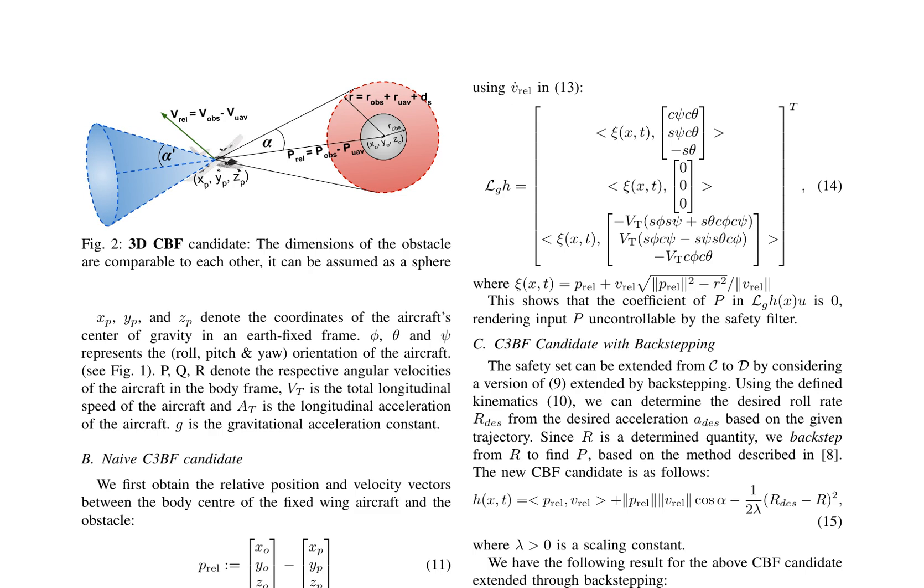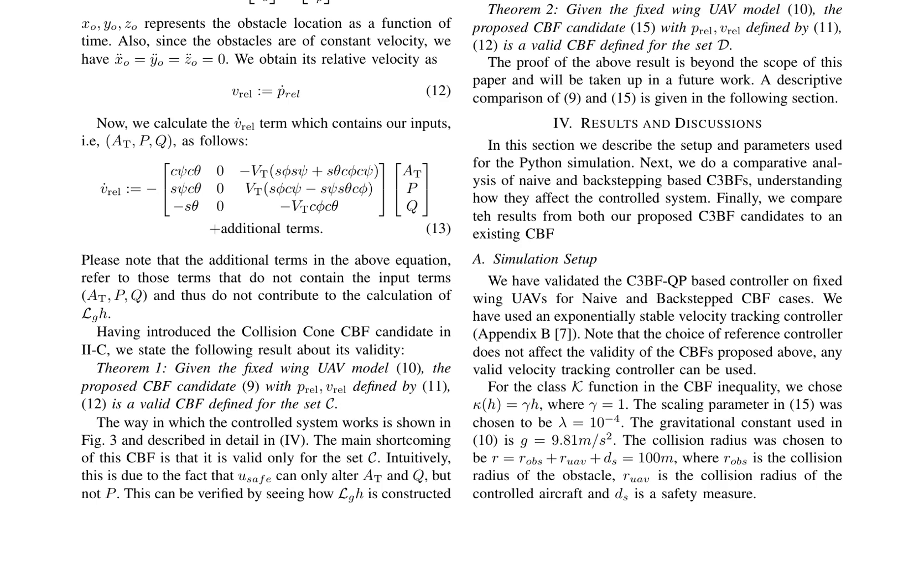To address this limitation, a new CBF candidate is proposed using backstepping. The safety set is extended from C to D by considering a version of (9) extended by backstepping. The desired roll rate is determined from the desired acceleration based on the given trajectory. The new CBF candidate is given by equation (15), which includes an additional term to account for the roll rate. Theorem 2 states that the proposed CBF candidate (15) with Prel, Vrel defined by (11) and (12) is a valid CBF defined for the set D. The proof of this result is beyond the scope of this paper and will be taken up in future work.